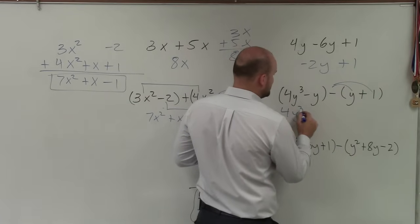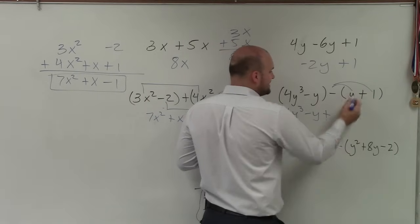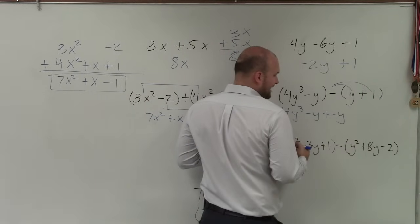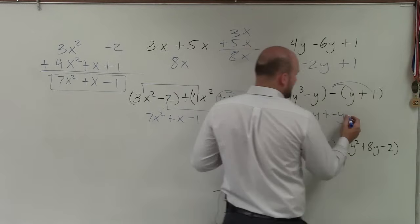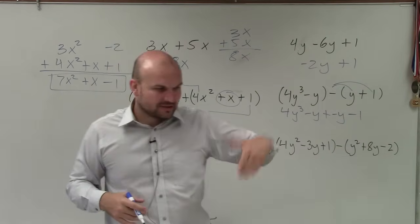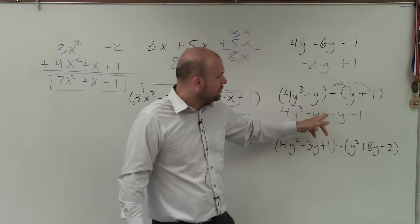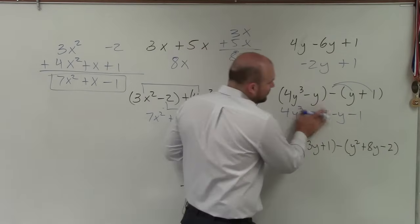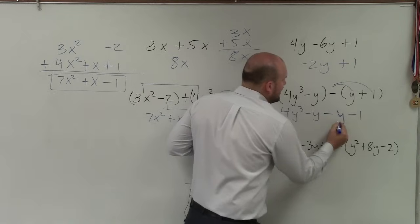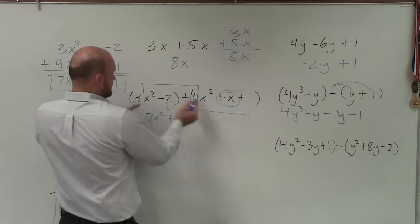So we have 4y cubed minus y. By applying distributive property, it's now a positive opposite of y, and then minus 1. So when we apply the distributive property, we're distributing this negative. So plus y squared is really just minus y, right?